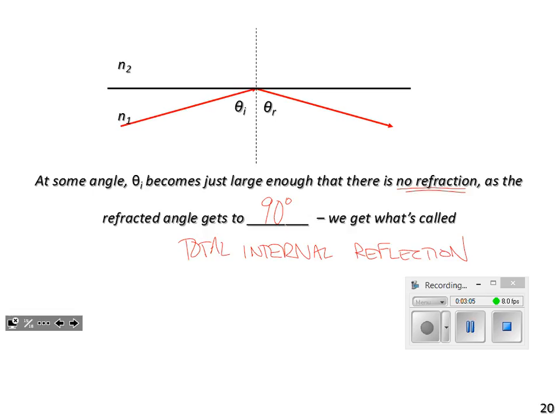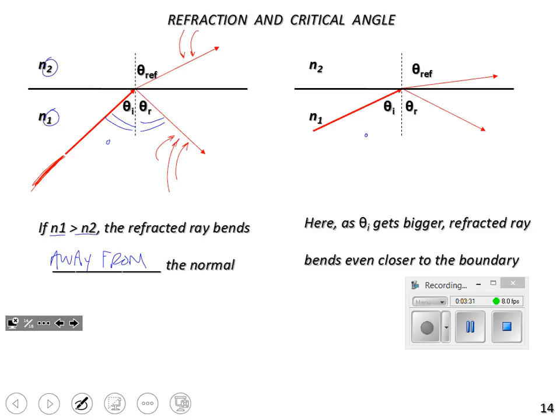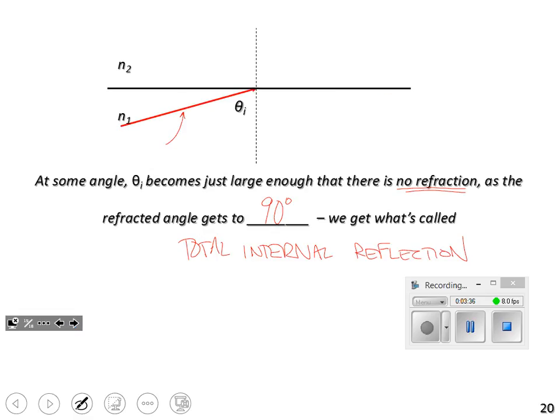When that happens, none of the light goes across the boundary. All of it reflects. Notice the thickness of this ray that I'm using to depict how bright the light is. Part of it goes through, part of it reflects. In this case, all of it reflects because none of it goes through.